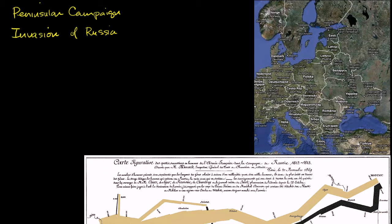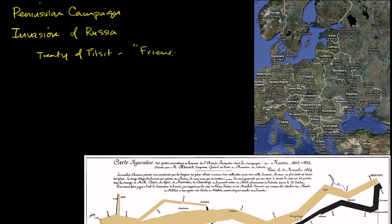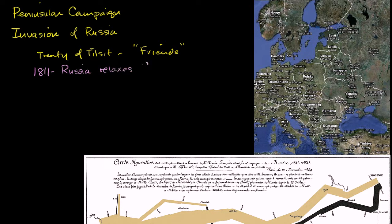Let's remind ourselves the relationship between Napoleon — or between the French Empire — and Russia. After the Fourth Coalition, you might remember the Treaty of Tilsit at the end of the Fourth Coalition — they're friends. Russia was part of the continental system, which means they would boycott — they would not trade with Britain or allow Britain to use any of Russia's ports. And Russia was allowed to do anything they want with the Ottoman Empire, so everything was good. But then we move forward to 1811, and Russia starts relaxing the continental system.